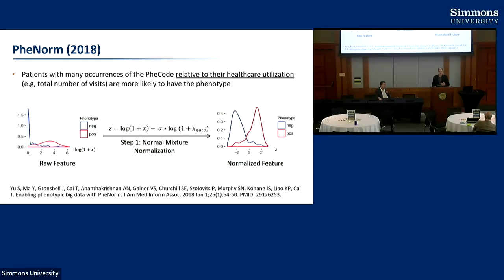If a patient has three visits about type 2 diabetes out of only four total visits, they're probably coming for diabetes care. But if a patient has 100 visits and only three mention diabetes, it's much less likely a true phenotype. When you normalize by healthcare utilization and graph it, you see two bumps. You can fit Gaussian curves to these distributions and set a threshold to determine through purely unsupervised clustering which patients most likely have the condition. This is called PheNorm.